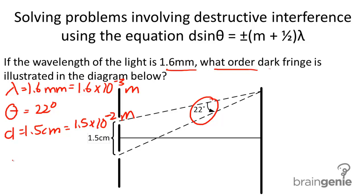And finally, we're solving for m. So plugging this information into our equation, we get 1.5 × 10^-2 × sin(22°) = (m + 1/2) × 1.6 × 10^-3.